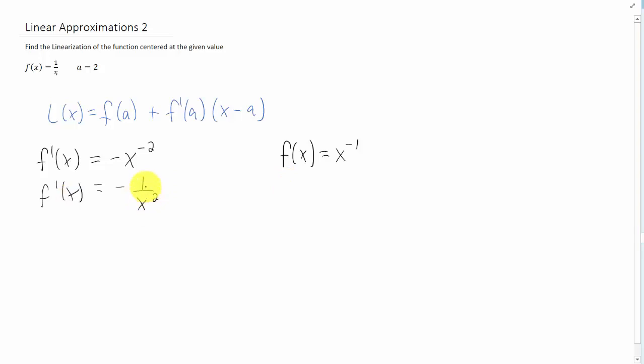Okay, that gives us the slope of our curve at any x value. We want the slope at a equals 2. So we're going to plug in x equals 2 into this derivative, and that's going to give us negative 1 fourth as our slope.